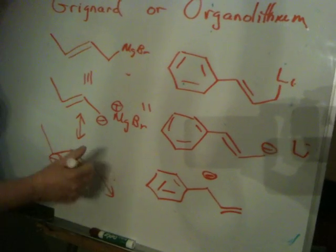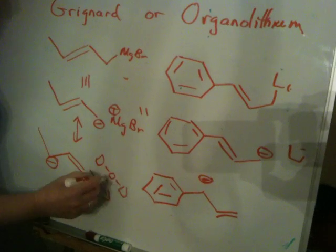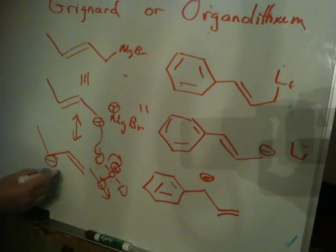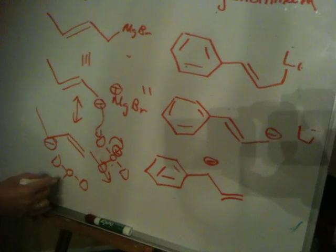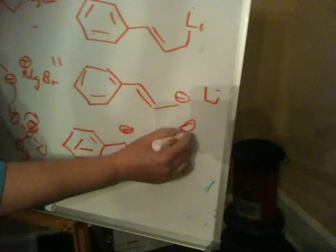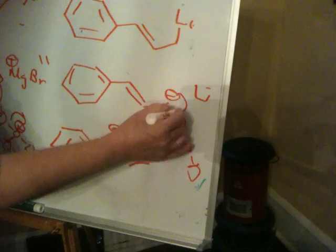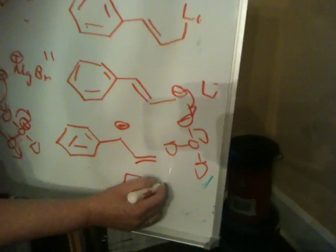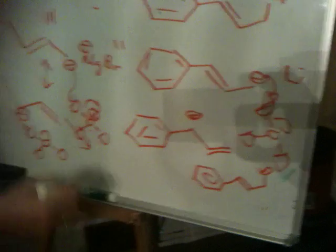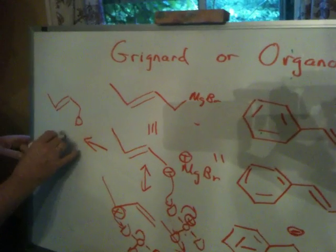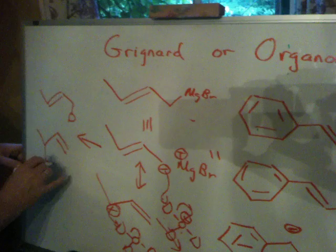So chemists actually use this as a way to introduce deuterium. That would get deuterated, but so would this. In these reactions, we're not being super concerned about kinetic versus thermodynamic control. But in this case, the deuterium would go on the end. In this case, you'd get two products — some with the deuterium in the original position, and some with the deuterium over here.